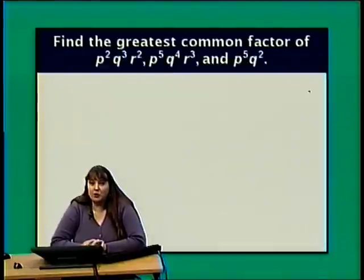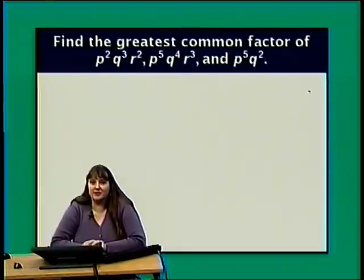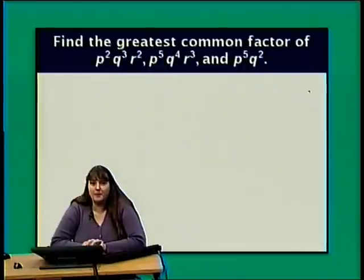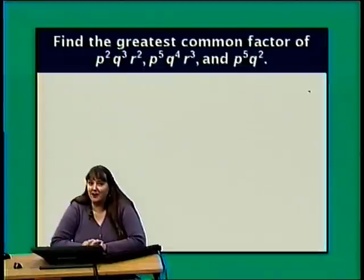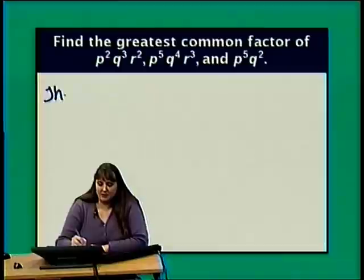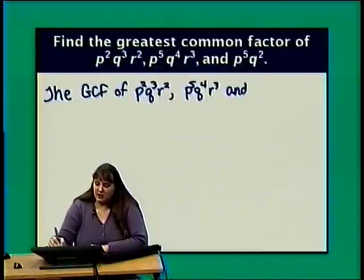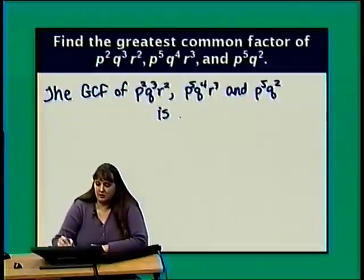What about the GCF of p squared q cubed r squared, p to the 5th q to the 4th r cubed, and p to the 5th q squared? I have three variables to consider. For p: smallest exponent is 2. For q: exponents are 3, 4, and 2 — smallest is 2. For r: the first expression has r squared, the second has r cubed, but the third has no r at all, so r is not part of the GCF. The GCF is p squared q squared.